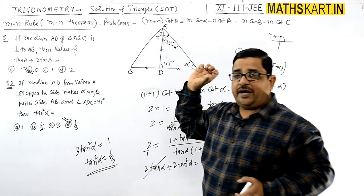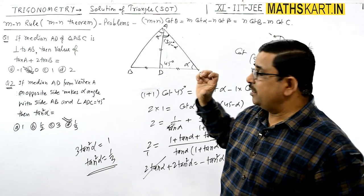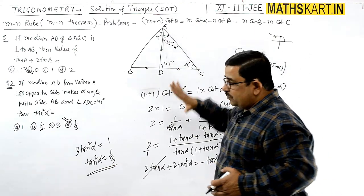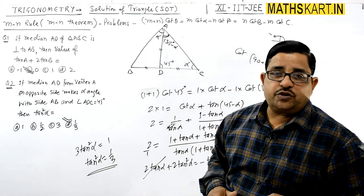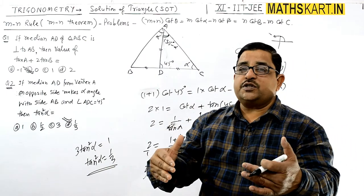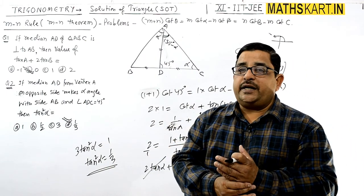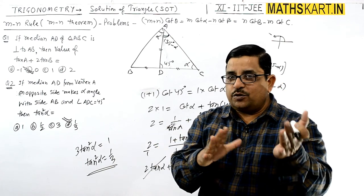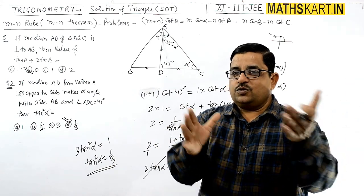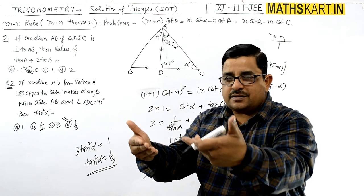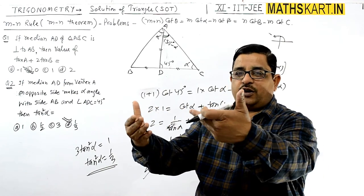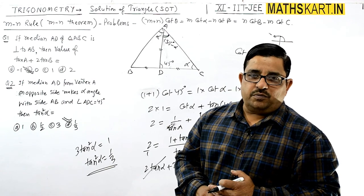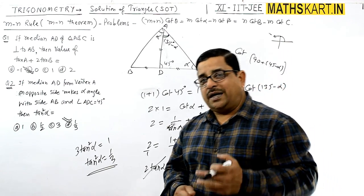So that particular angle is 135 minus alpha, and then we can directly use the MN theorem. Before using the MN theorem, the raw material may be given in a different format, so we first need to convert it into the MN theorem format before applying it.